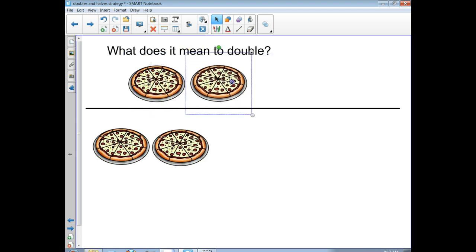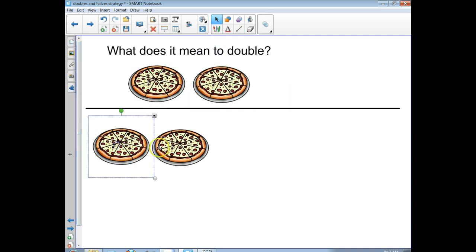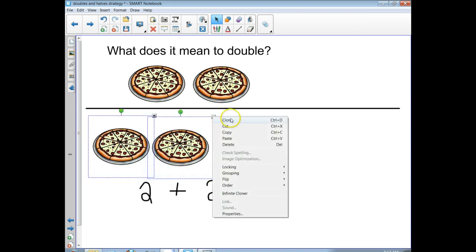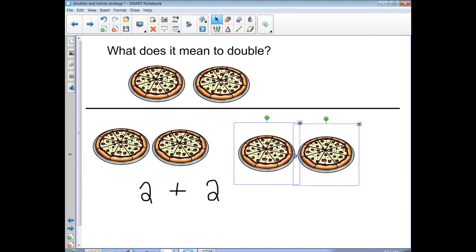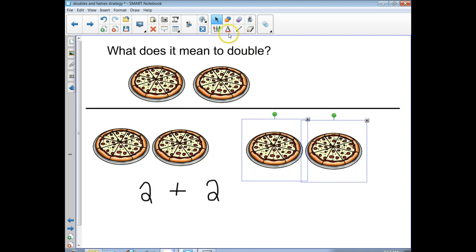So let's think about this. If I had two pizzas and I double that, I'm doing two pizzas that I have plus another two. So let's see if I clone both of these. Now how many do I have? I've got four, so I've got two plus two, and that equals four. So two doubled is four.